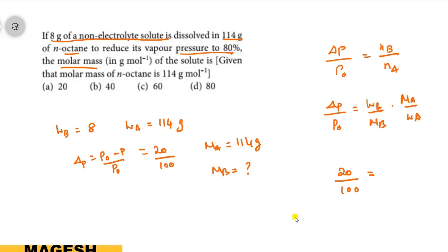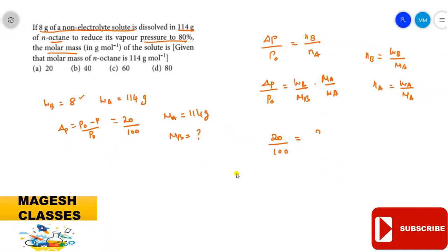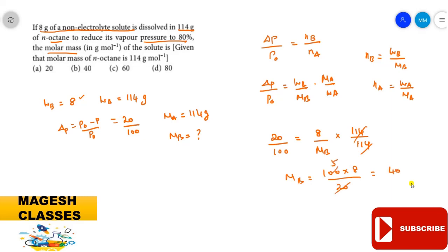Solving for M_B: M_B equals 100 × 8 divided by 20, which gives 40 g/mol. The answer is B, 40 gram per mole.